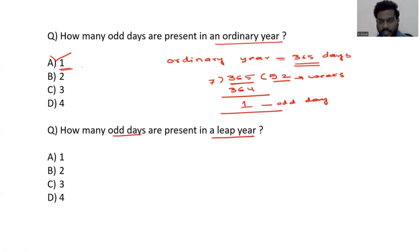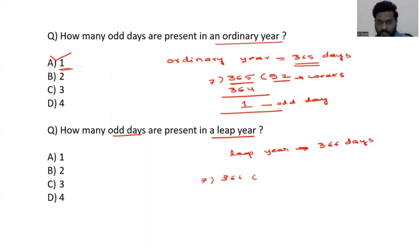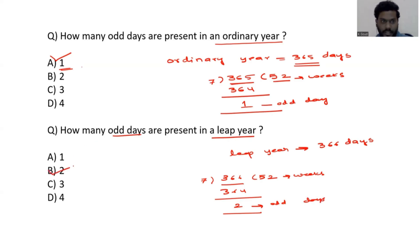Now how many odd days are in a leap year? A leap year contains 366 days. Divide 366 by 7: 7 times 52 is 364, and the remainder is 2. So a leap year contains 52 weeks and 2 odd days. The answer is B. To remember: an ordinary year contains 1 odd day, and a leap year contains 2 odd days.